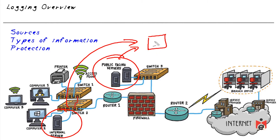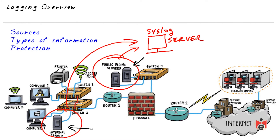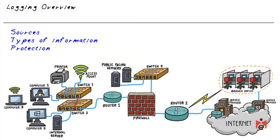If our servers are configured to send syslog messages to a centralized server — including messages whenever a new port is opened — then if malicious software or an administrator accidentally opens a port that shouldn't be open, we can identify that from the collective log information on the syslog server. The same applies if an open port is disabled.